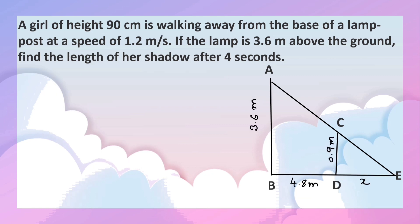By looking at triangles ABE and CDE, we can say that they are similar. But now we have to prove. Angle E is common to both. Angle B equals angle D. They are 90 degrees, since both lamppost and girl are standing vertically on the ground. So triangles are similar.